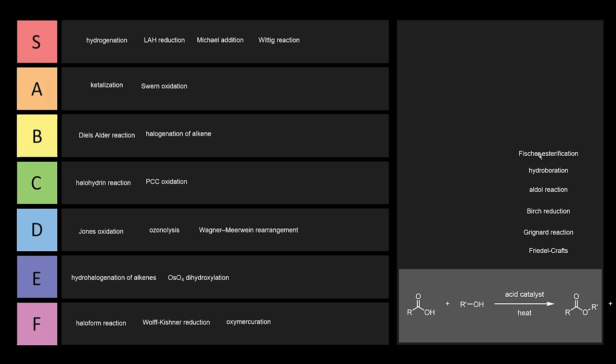Unless you have something really sensitive, Fischer esterification is a great cheap way to make esters. Good reaction, S tier. Even though it's not an S tier reaction, it's S tier in terms of its utility.